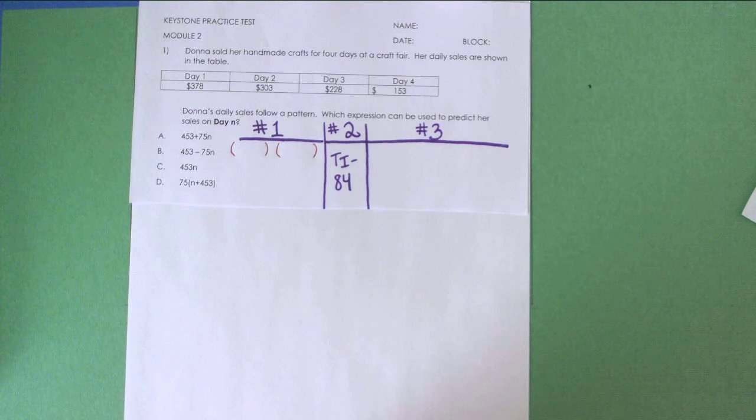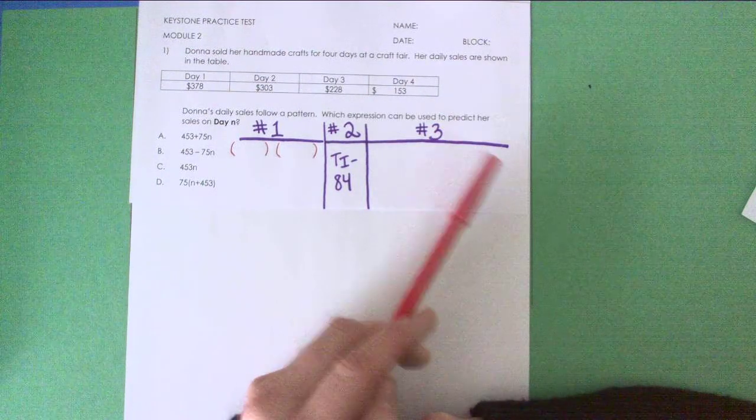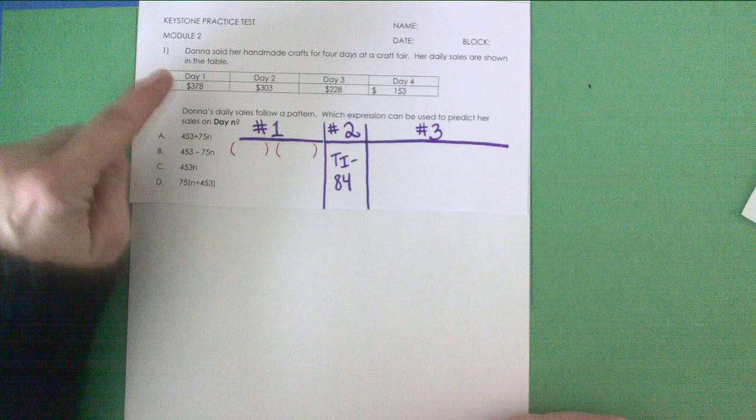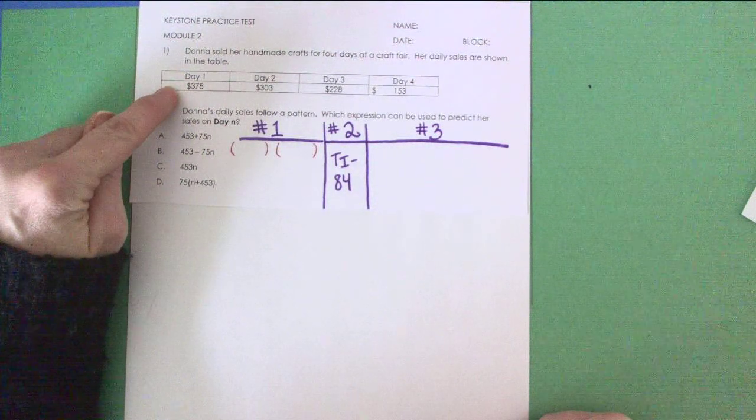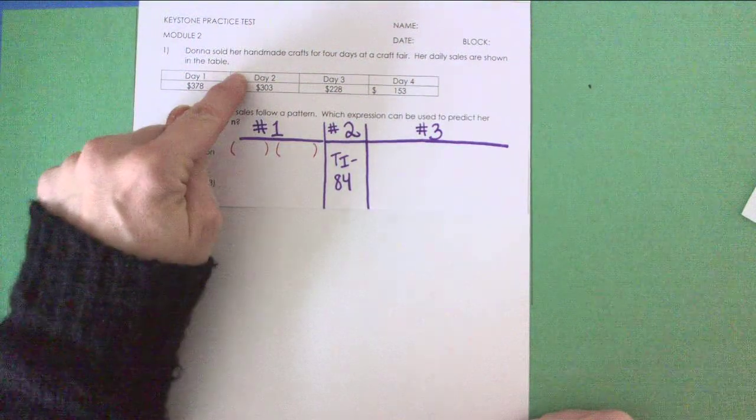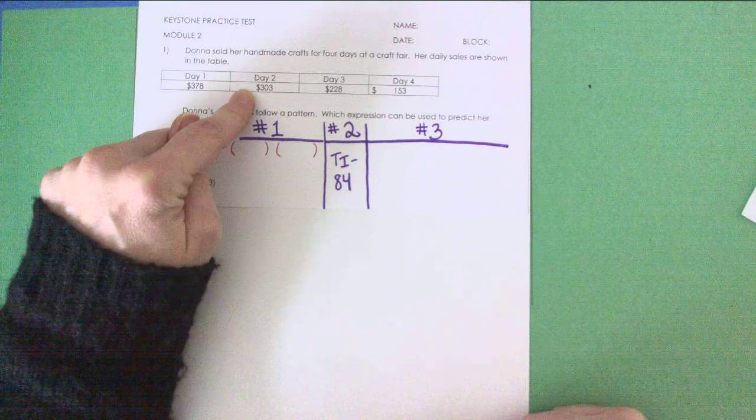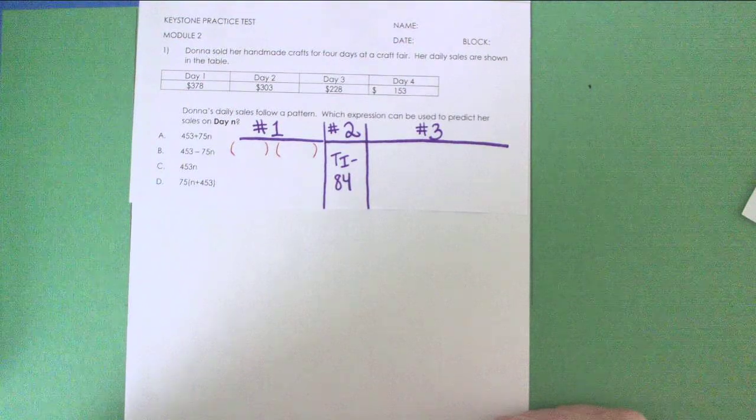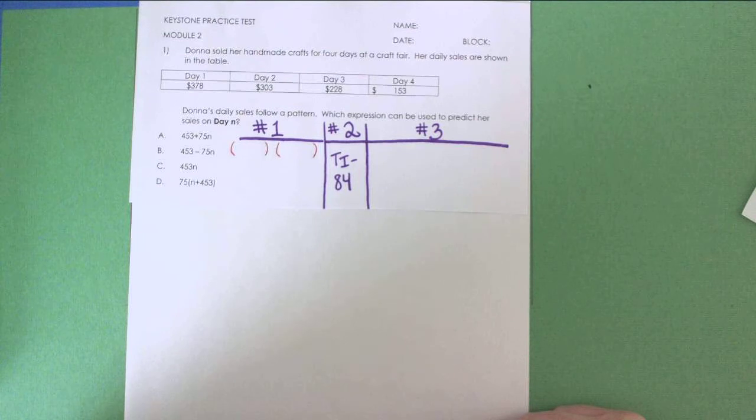Let's take a look at question number 1. Donna sold her handmade crafts for 4 days at a craft fair. Her daily sales are shown in the table. So you can see on the first day she made $378, on the second day she made $303, on the third day she made $228, and on day 4 she made $153.